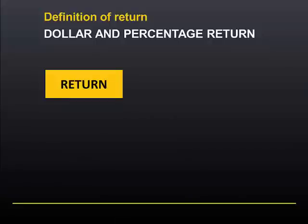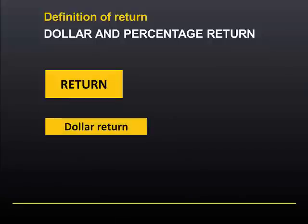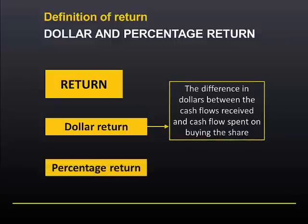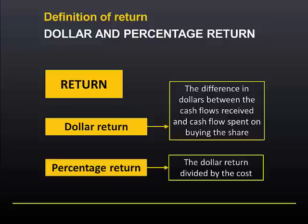Return can be calculated in two ways. We can calculate the dollar return, which is the difference between the benefit and the cost. Or we can calculate the percentage return, which is the dollar return divided by the cost.